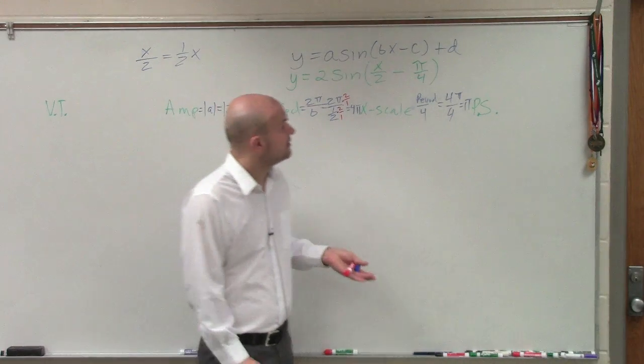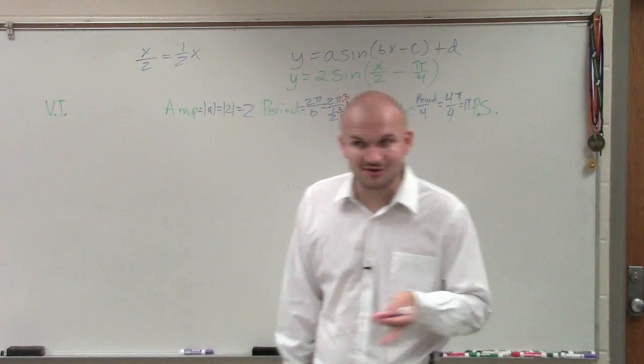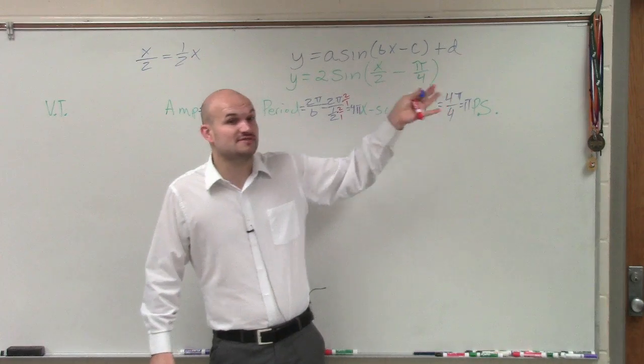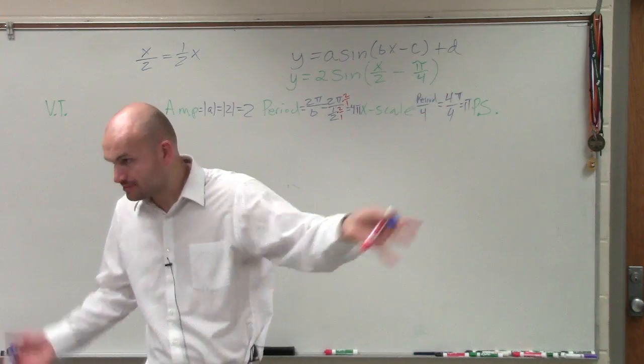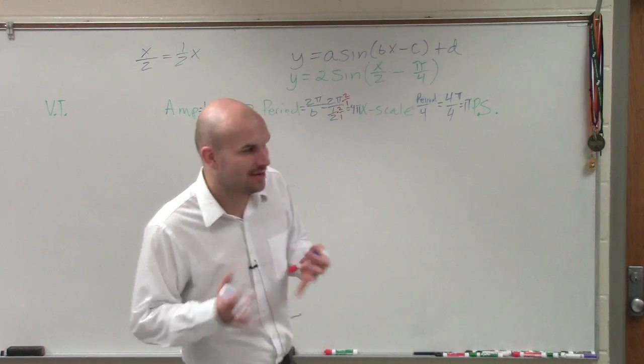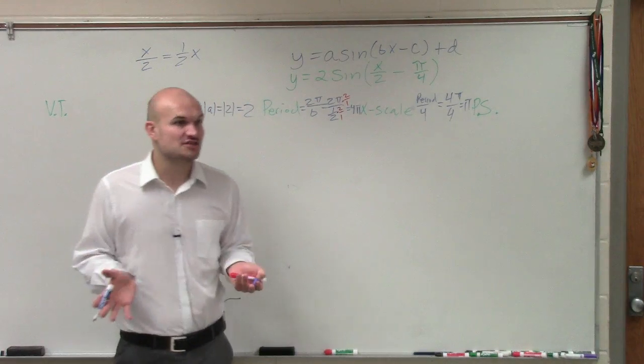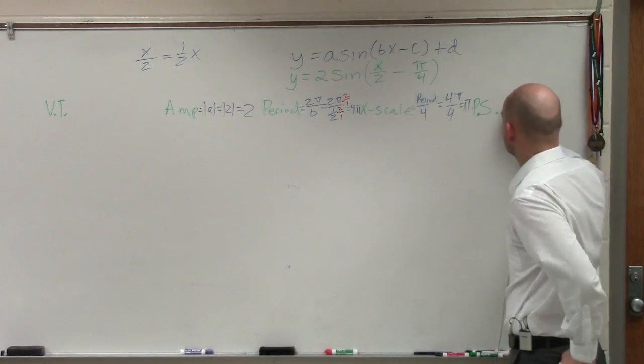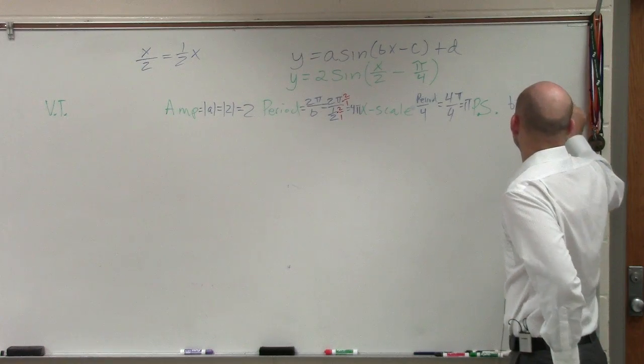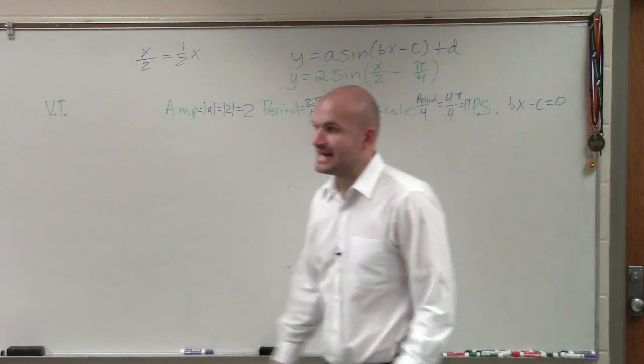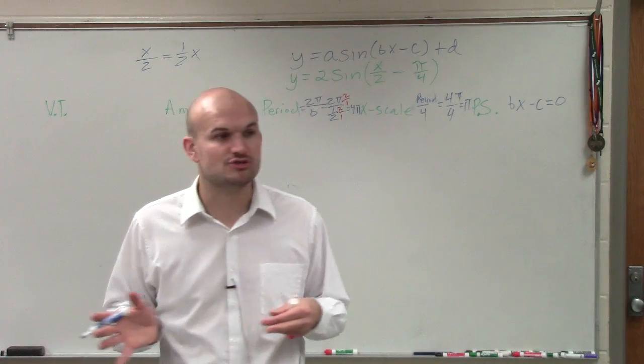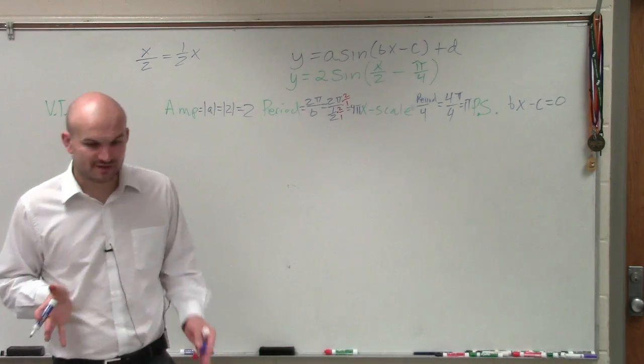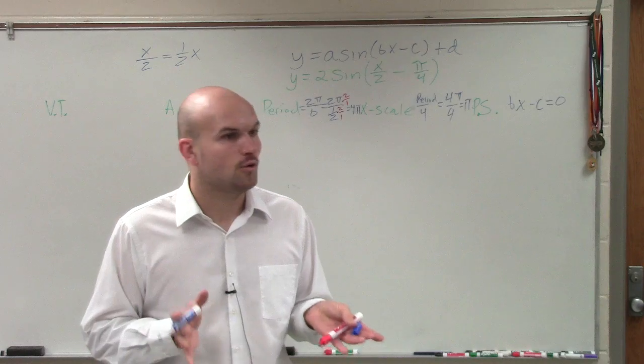Now, we didn't talk about phase shift yet. Phase shift is going to affect a little bit of how we're going to get it. I know a lot of you guys will say, oh, phase shift is going to be shift π over 4. But our phase shift is affected by our period. To determine our phase shift, what we're going to do is take bx minus c and set it equal to 0. That's actually going to tell us how we're going to change it.